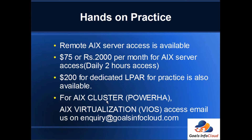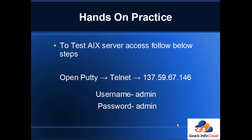We have a setup of Power H and PowerVM as well. To get access, send an email to inquiry@goalsinfocloud.com. To test connectivity to our server, open PuTTY, click on Telnet, and type the IP address. The username is admin and the password is admin — you'll get the admin user login and can fire basic UNIX commands like checking the OS level using prtconf to see the server configuration.